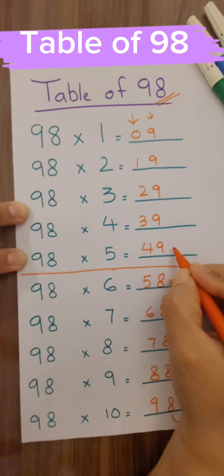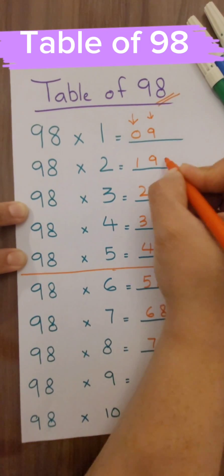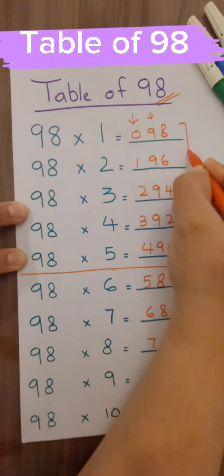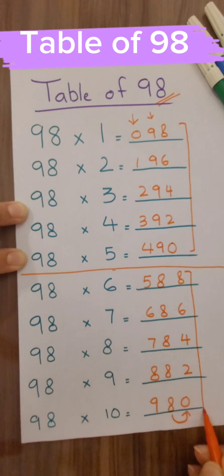Now you have to again repeat this pattern: 0, 2, 4, 6, 8. So you can see that from here to here we have repeated this sequence.